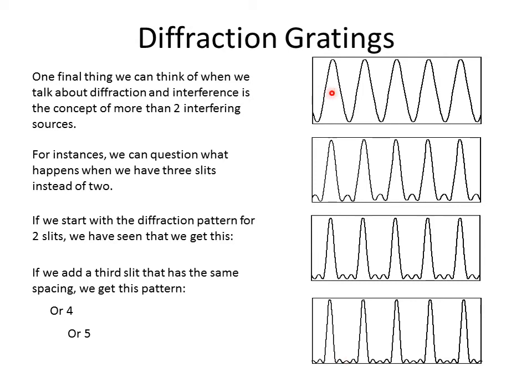The other thing we notice is that the separation in the middle — the width of the primary peak — is getting thinner and thinner as we add more slits. So the spot that we produce is getting thinner and thinner, and this is actually a really useful effect.